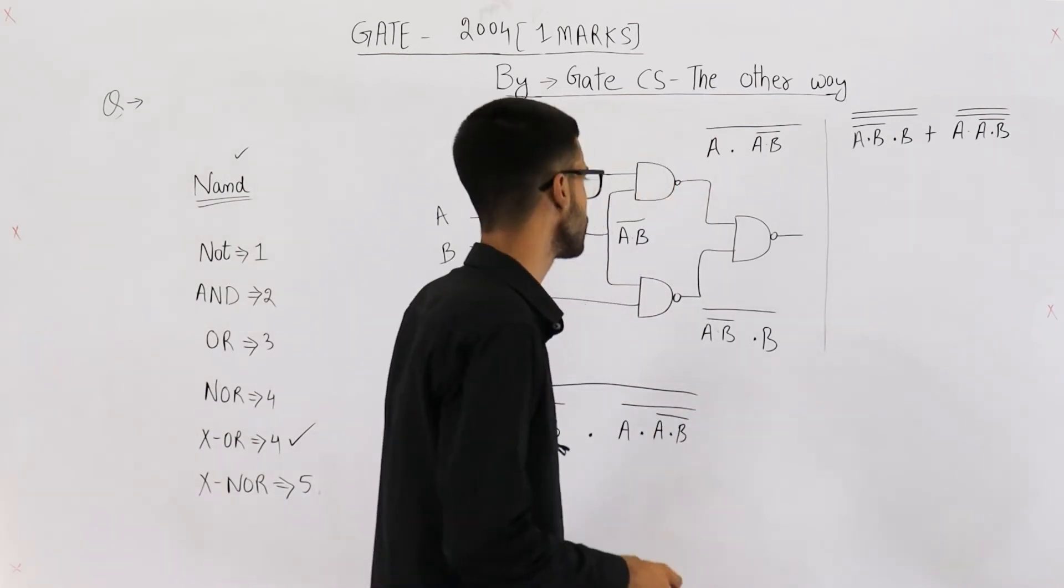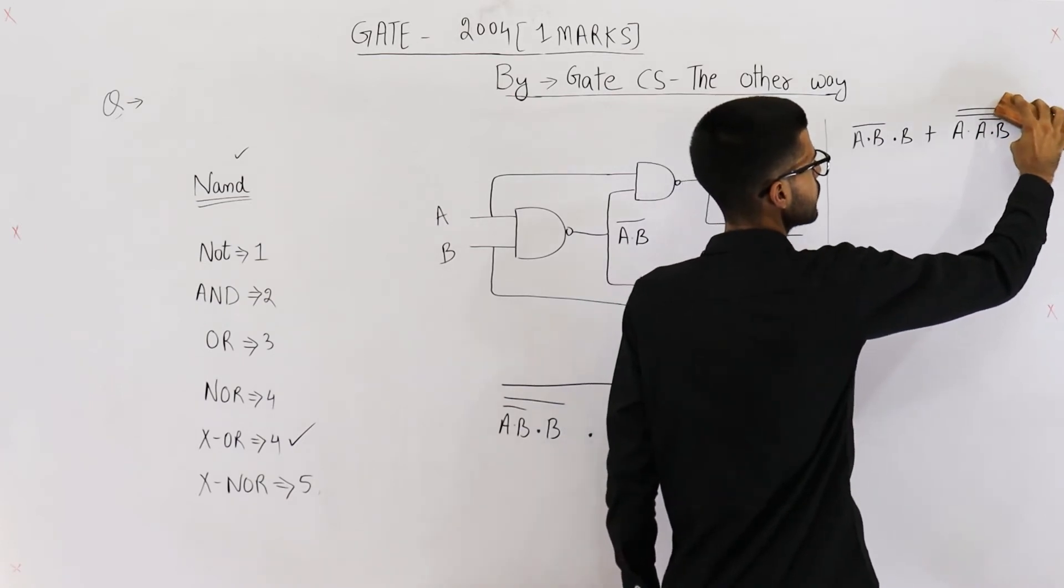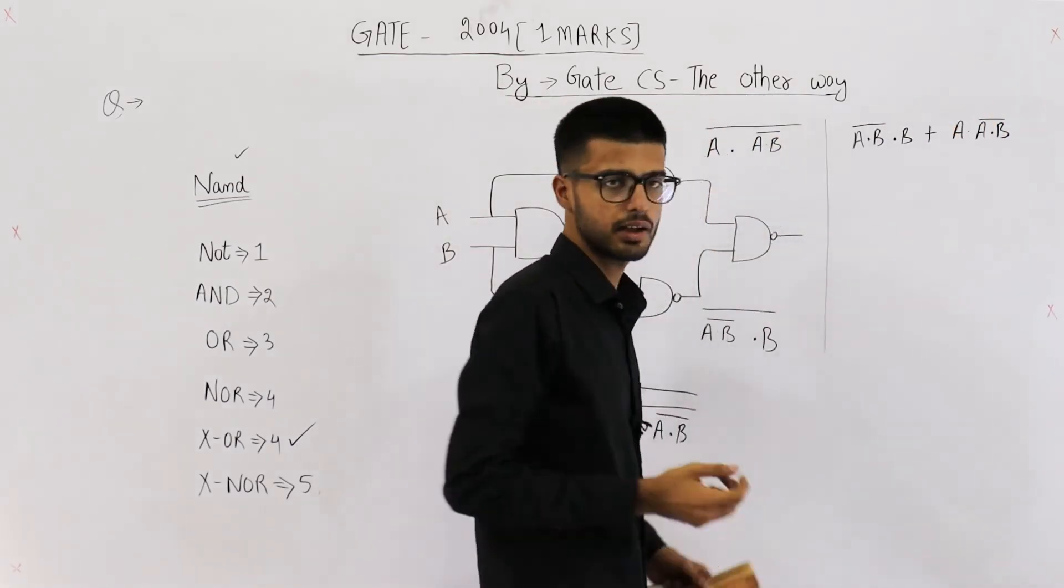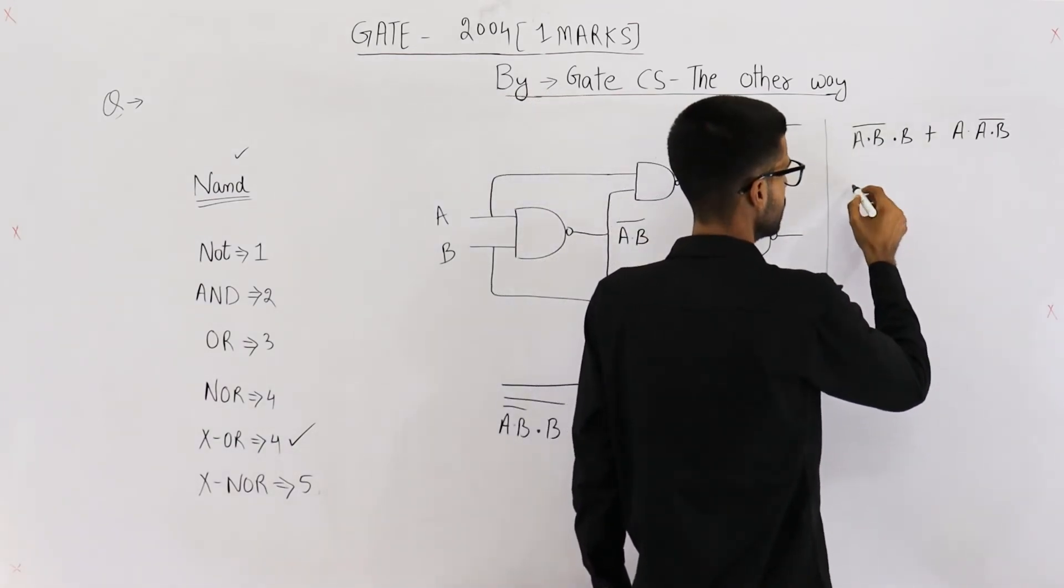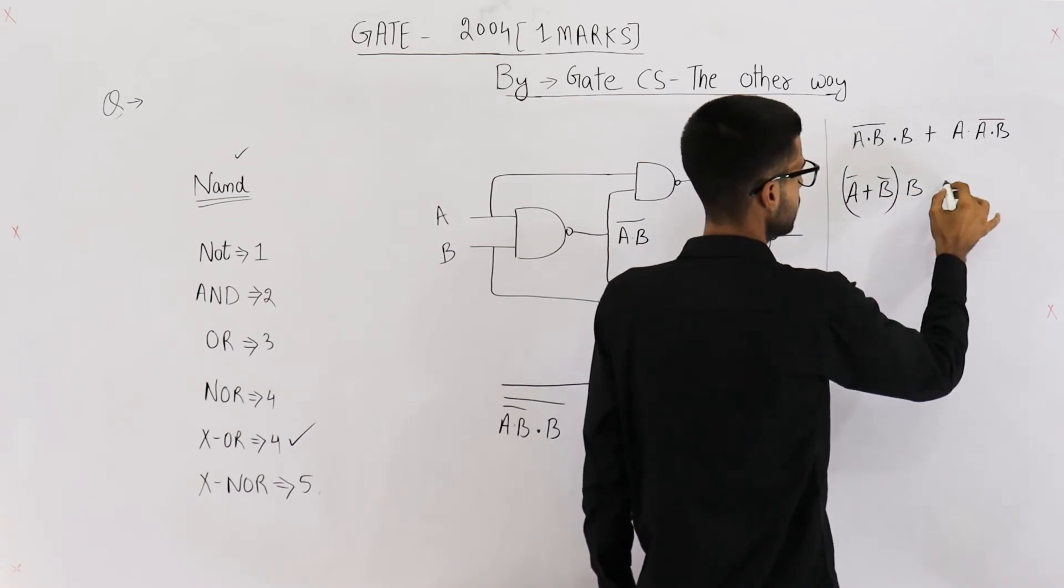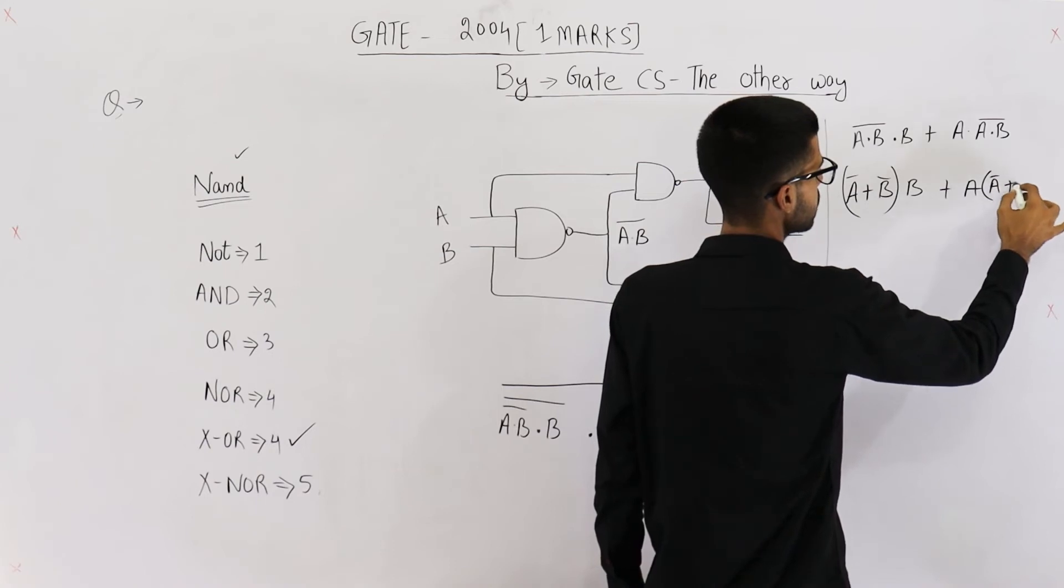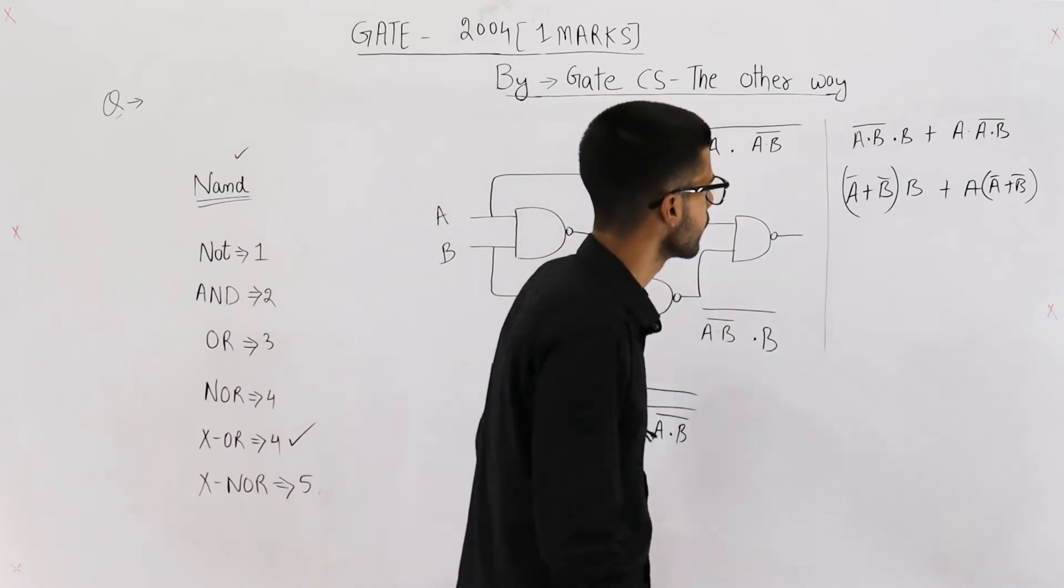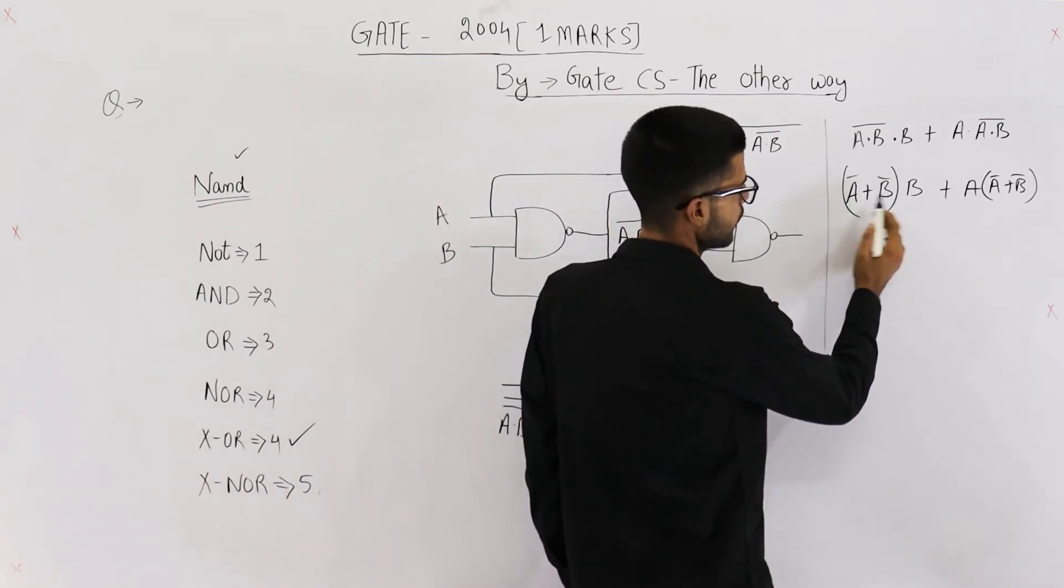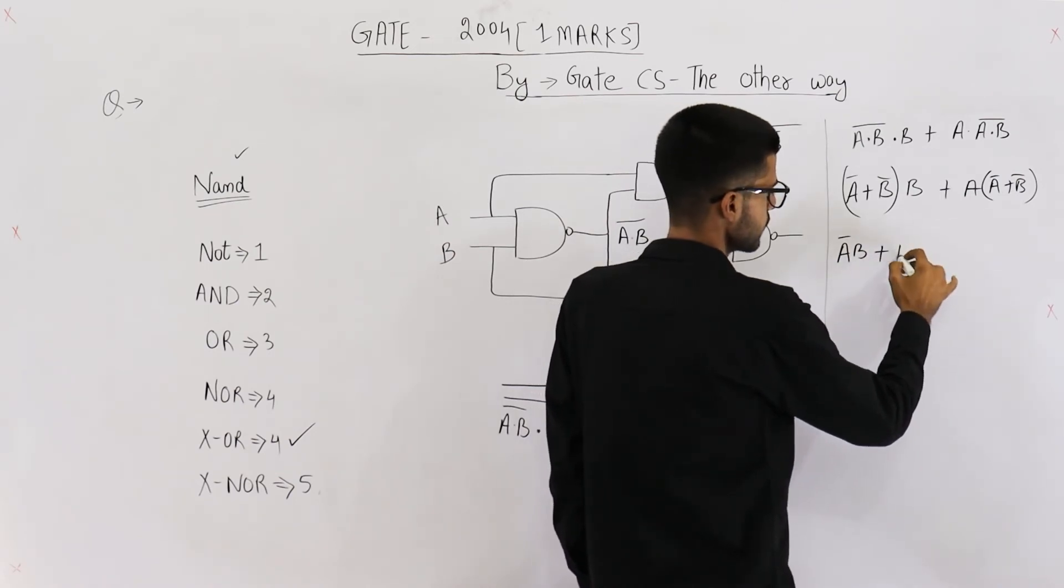Again, De Morgan's law is applicable. Let's apply De Morgan's law on this term as well as this term. So you will get A complement plus B complement dot B plus A into A complement plus B complement. Let's open these brackets. You will get A complement B plus B complement B plus A complement A plus A into B complement.